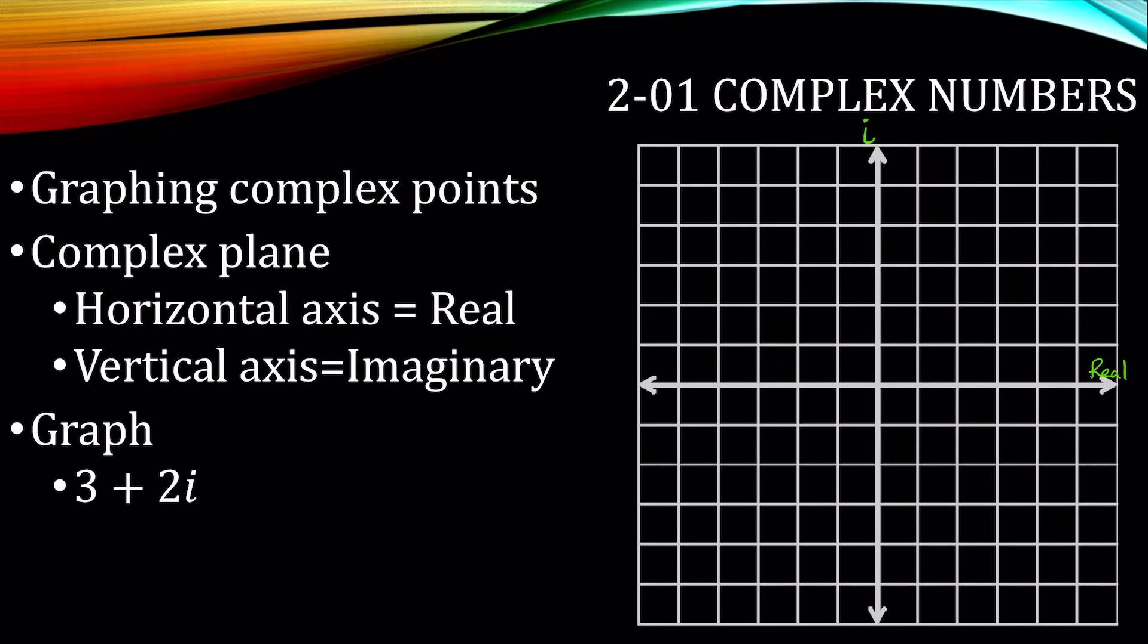So let's graph 3 plus 2i. We'll go 3 in the real and up 2 in the i. This is like the point (3, 2). So over 3, up 2. Let's graph the point negative 2 minus 4i, which is like negative 2, negative 4. So negative 2 in the real, negative 4 in the imaginary.